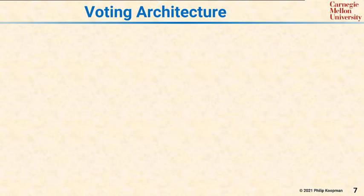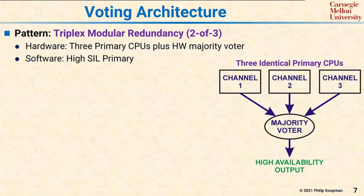The next architectural pattern is a voting architecture. The pattern is triplex modular redundancy, often known as two out of three. The hardware consists of three primary CPUs plus a hardware majority voter. All three CPUs run, and if any two of them agree, the voter says that must be the right answer. If one of the CPUs fails, it will not agree and gets voted out.